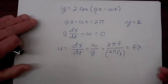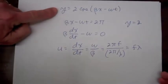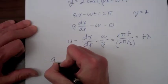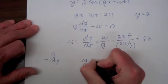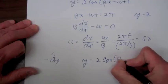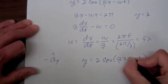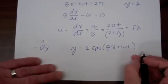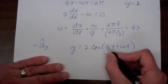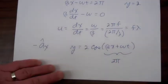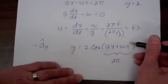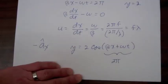If you want to write an expression for a wave propagating in the minus x direction, all you have to do is change the minus to a plus. The way to think of that is: if you're riding on a crest where the argument equals 2π, and time is increasing, in order for the argument to stay equal to 2π, x must be decreasing.